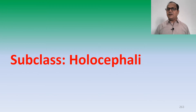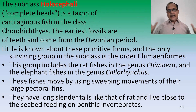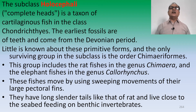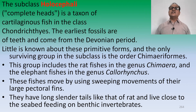The second subclass is Holocephali. 'Holo' means entire and 'cephali' means head — so Holocephali refers to organisms whose entire head is covered with scales. Holocephali is a taxon of cartilaginous species in the class Chondrichthyes. The earliest fossils are of teeth and come from the Devonian period. The only surviving group in the subclass is the order Chimeriformes.